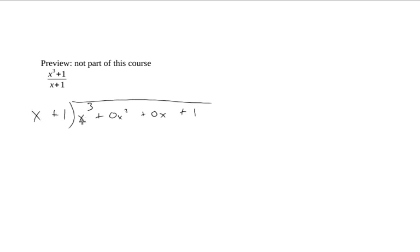So what I'm going to do is I'm going to say, well, what number, or, you know, how many times can x plus 1 go into x cubed? Well, I'm going to take x squared, because x squared times x plus 1, when I multiply that out, I get x cubed plus x squared.